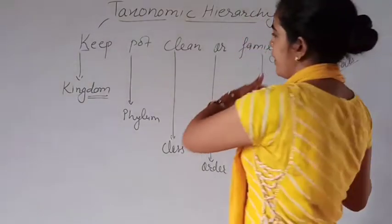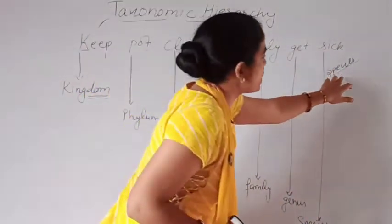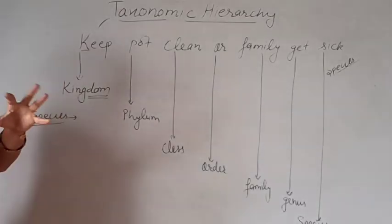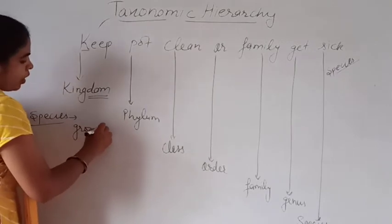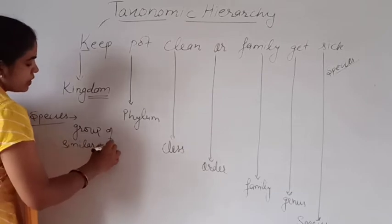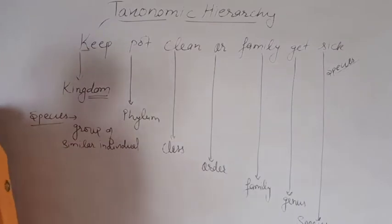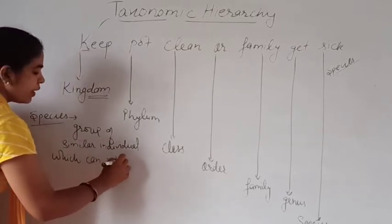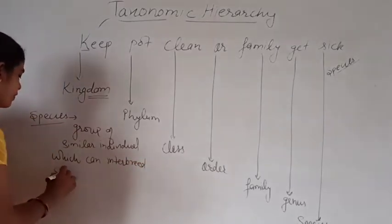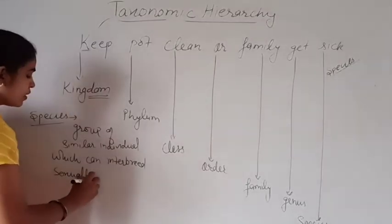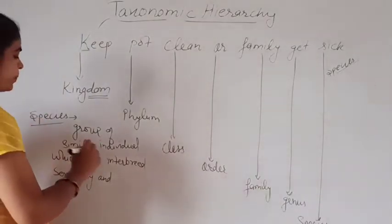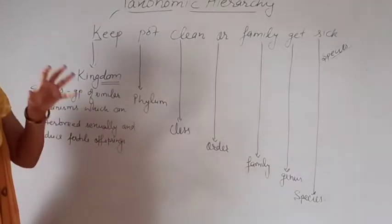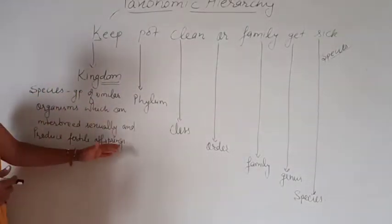If we define species, we can define all other categories easily. Species is a group of similar individuals which can interbreed sexually and produce fertile offspring.